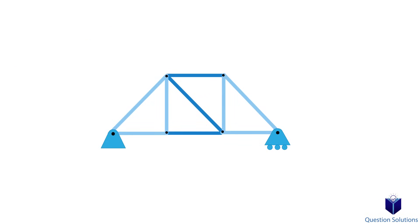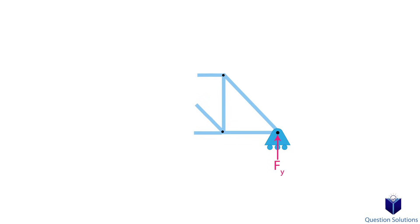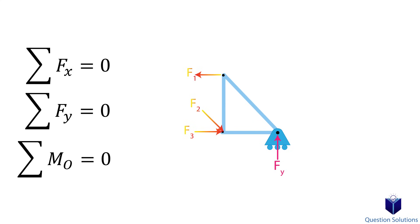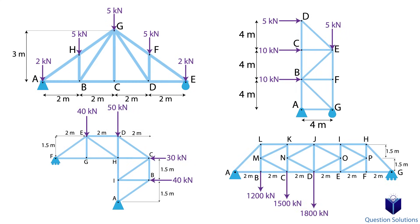The method of sections is based on the fact that if the whole truss is in equilibrium, then any segment of the truss is also in equilibrium. We can then apply an equation of equilibrium or a moment equation to solve for unknowns. The first step is to find the reactions at one support, then section it off by cutting the truss through the members we're trying to solve. We forget about one part of the truss — most of the time the part where we didn't find the reactions.